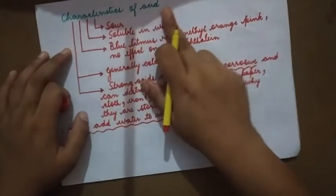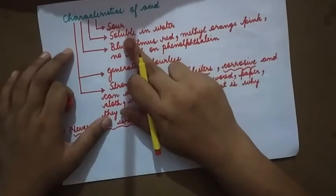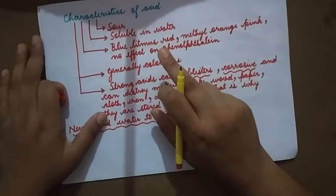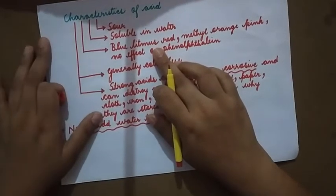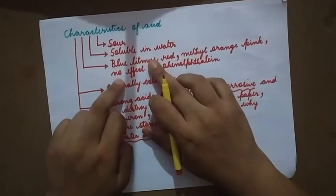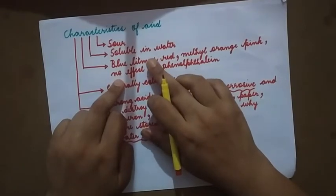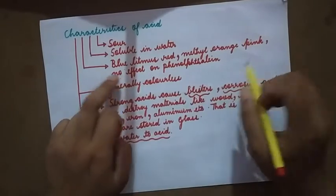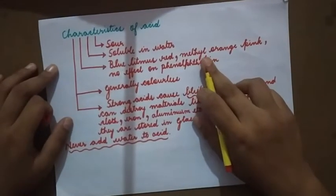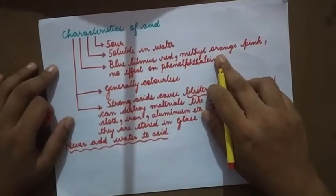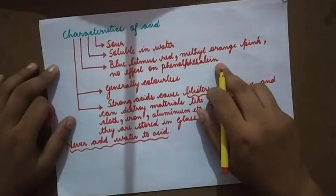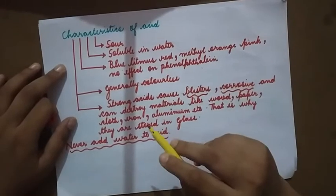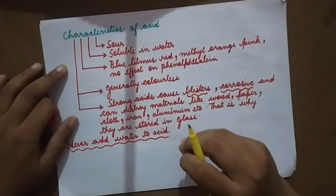Characteristics of acids: they are sour to taste and soluble in water. Litmus paper, made from lichen, is used as an indicator to test for acid and base — acids turn blue litmus paper to red. Methyl orange is also an indicator; it turns pink in the presence of acid. Phenolphthalein is also an indicator, but there is no effect on it in the presence of an acid. These — litmus paper, methyl orange, and phenolphthalein — are all indicators to test for acid or base.